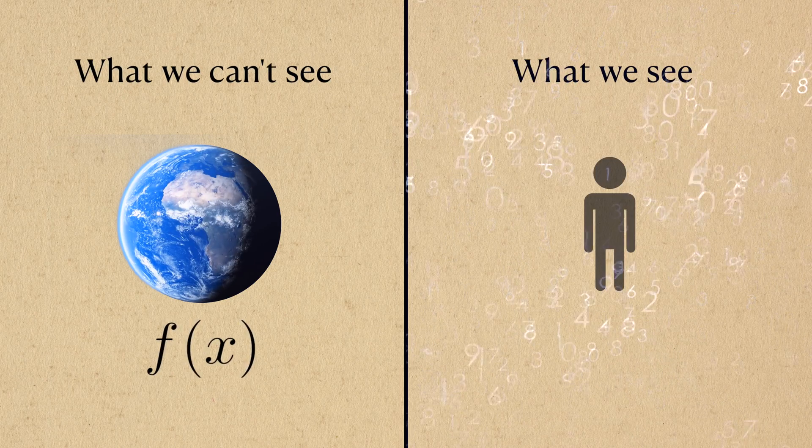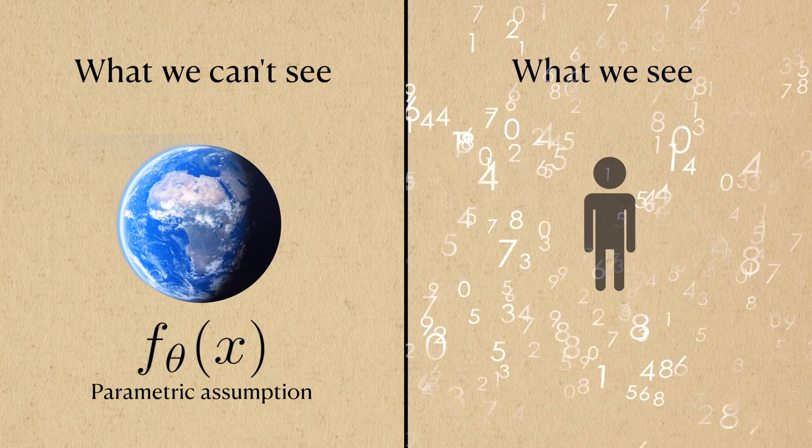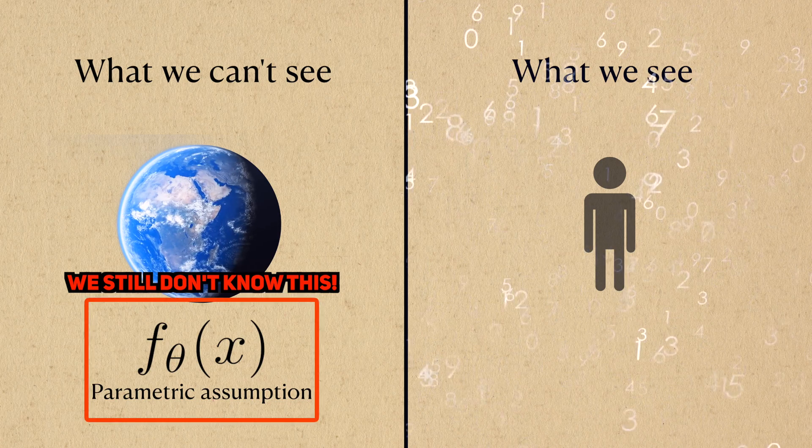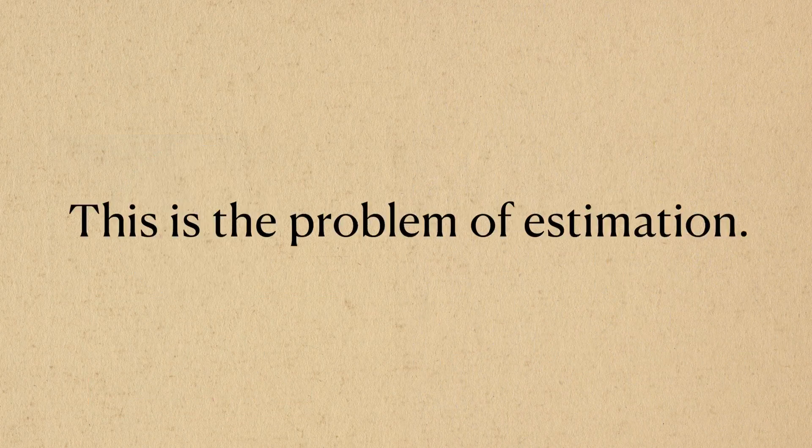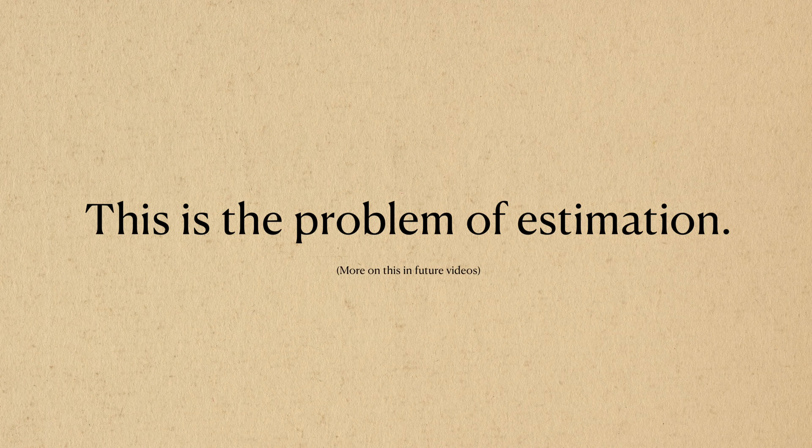But this assumption only simplifies the problem, it doesn't solve it. We still need to figure out what the probability distribution is based on the data we collect, even if it's a parametric family. This is the problem of estimation, and we'll cover this in another video.